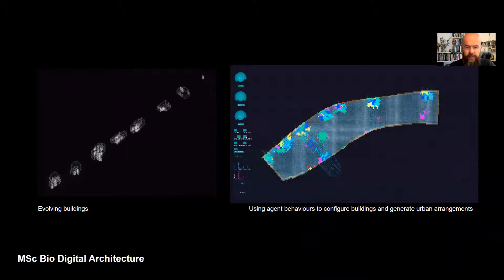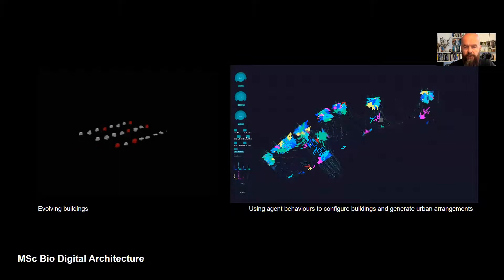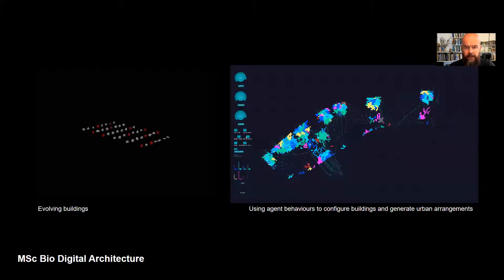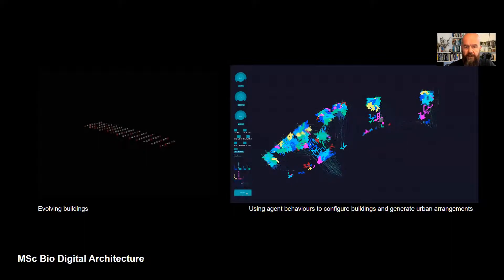Students will be introduced to novel concepts of biology and computer science to understand how these work and apply to architecture — to think about behavior and the generation of shape, form and thereby the configuration of space, and to understand how these may arise as a product of the interactions and performance of entities in a system.